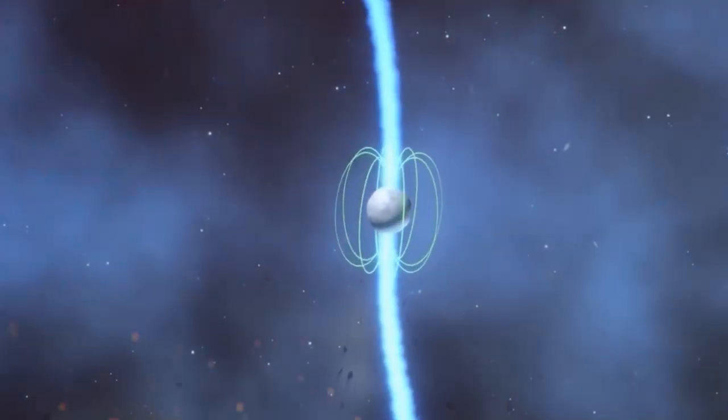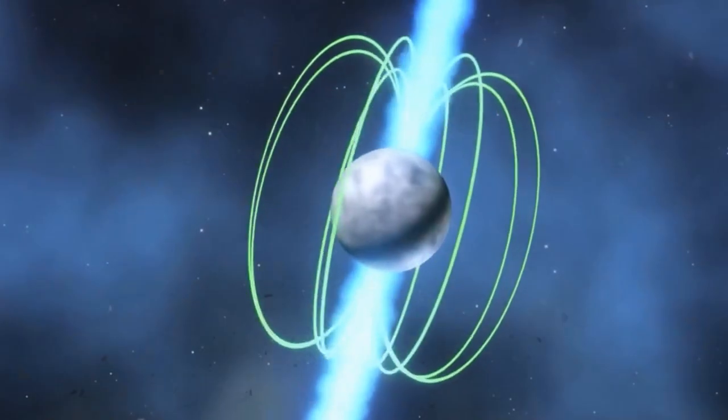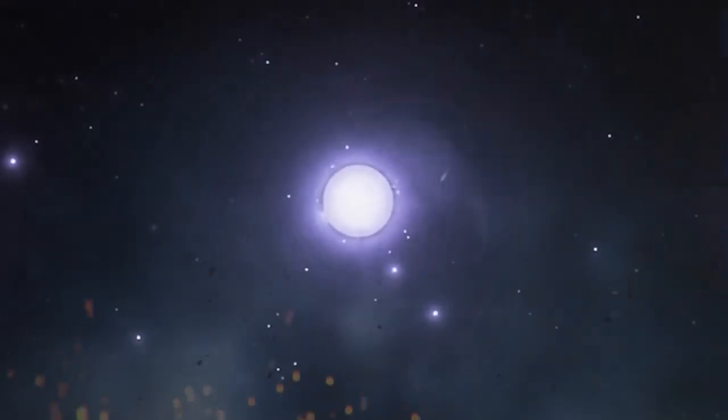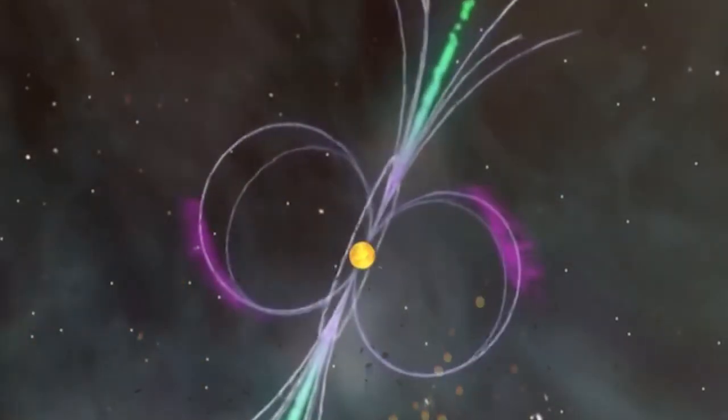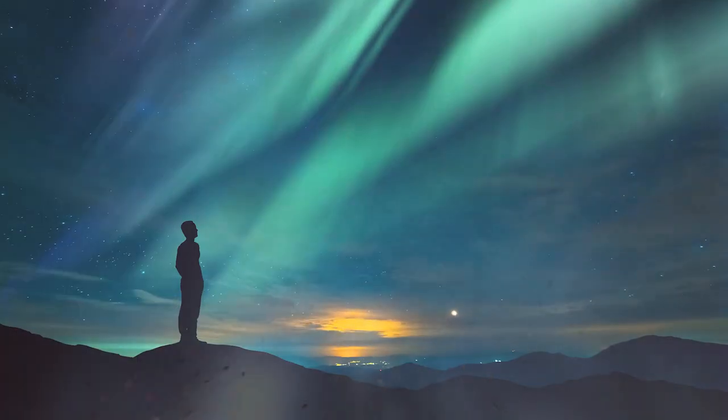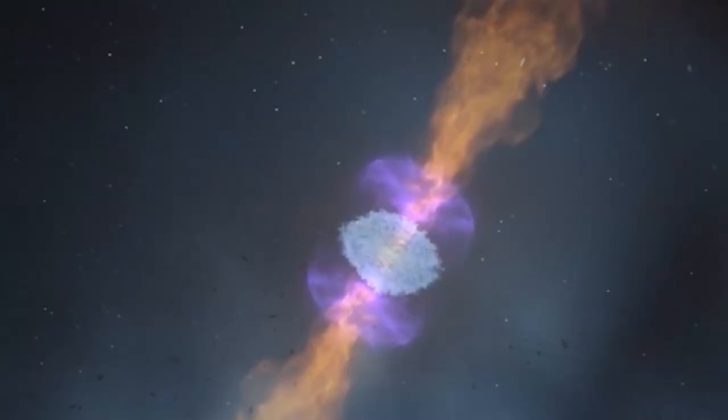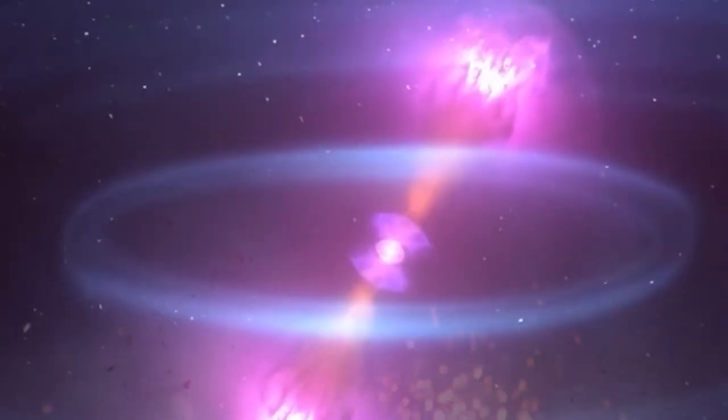But how does a neutron star level up to become a magnetar? Well, it cranks up the magnetism to an insane degree, billions of times stronger than your fridge magnet. Here's the kicker: only one out of ten neutron stars take this magnetar route. The rest hang out as pulsars. So it's a rare celestial phenomenon. In just a few moments, you'll be happy to discover its exceptional rarity.